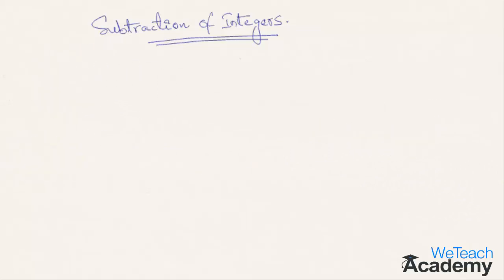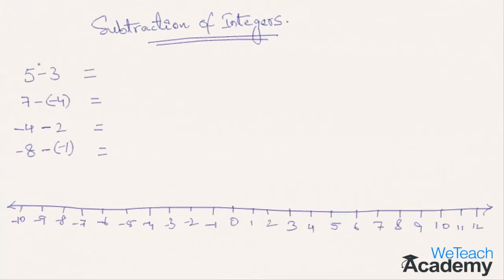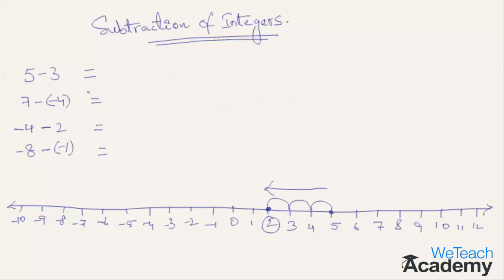The first example is 5-3. You need to mark the number 5 on the number line and then, since we are subtracting 3 from 5, you move towards the left. We stop at number 2, which is the answer of 5-3. The concept is the same: if you are subtracting a positive number, you move towards the left.